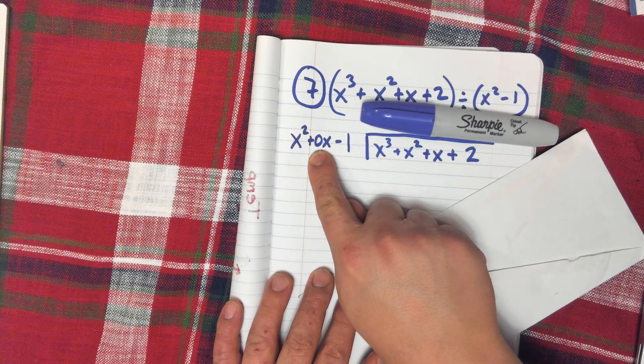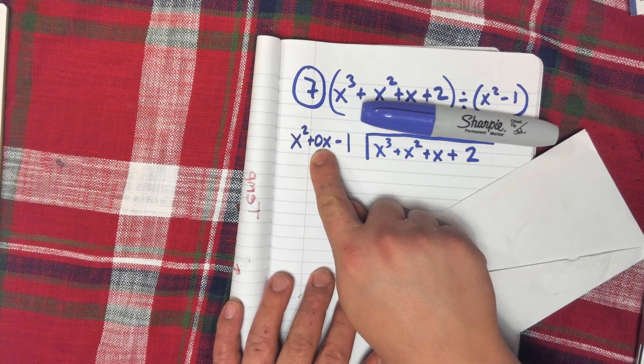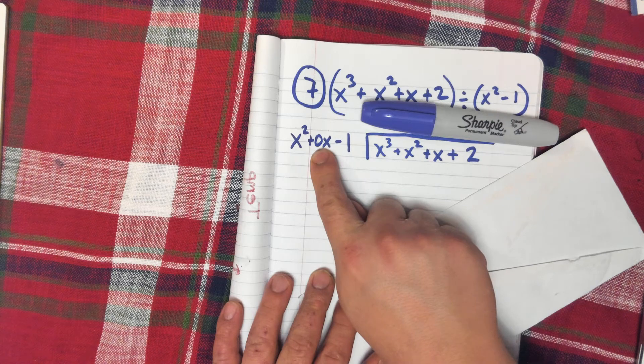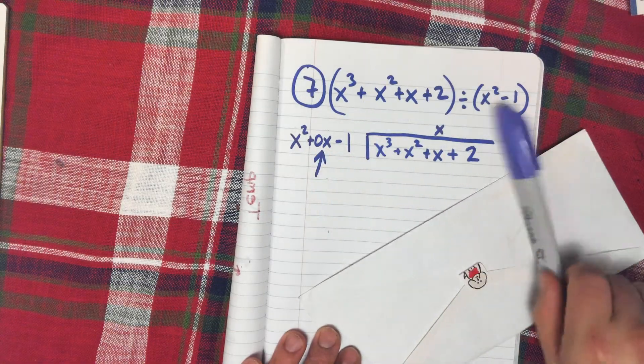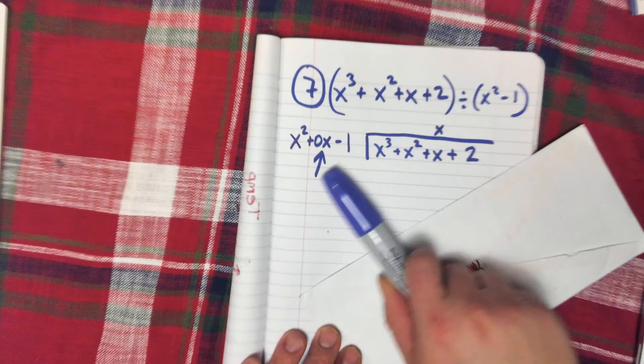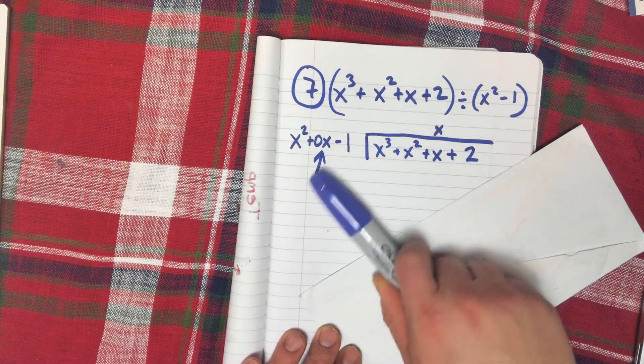If I add 0 times x, it doesn't matter what x is. I'm really just adding 0 to this, so I'm not changing the value. I'm allowed to do that. So I took my x squared minus 1 and just threw a 0x in the middle for a placeholder.